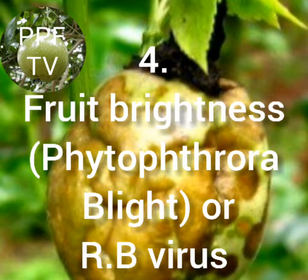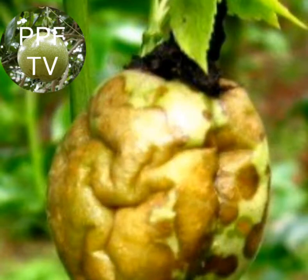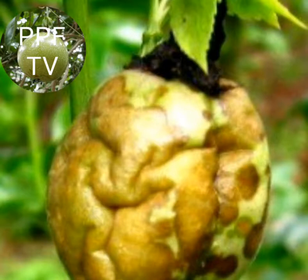Disease number four: Fruit Rot or RB Virus. It is initially produced in wet soil beneath the vine and is splashed up to the lower leaves and canopies. If the vine is injured during maintenance, the fungus enters the plant and wilts the vine. Signs of infection include diseased fruit falling readily, and in wet weather the fruit becomes covered with white fungal growth.